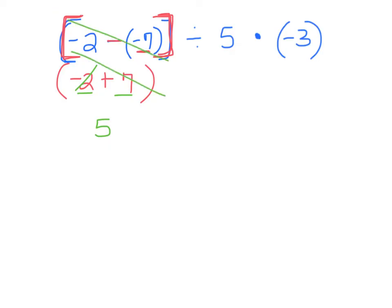So I took care of this. Now I'm just going to rewrite it. 5 divided by 5 times negative 3. So all I have left is division and multiplying. So you have to think, what do I do first? Well, multiplying and dividing, they're together, so you go left to right. So I'm going to start with 5 divided by 5. Well, 5 divided by 5 is 1. Took care of that.